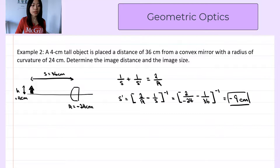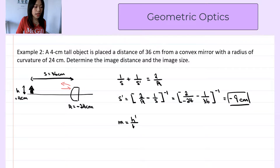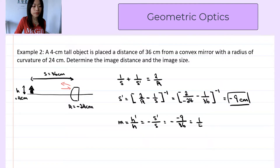s prime is negative, which means the image will be on the opposite side as the outgoing light. Since we have a mirror, the light is reflected and the outgoing light is on the left, so the image will appear on the right of the mirror — that is, behind the mirror. To find the image size, we find the lateral magnification: m = h prime over h = negative s prime over s = negative(−9)/36 = positive one-quarter. So the image height is one-quarter of the object size.